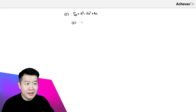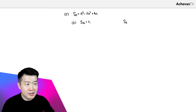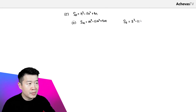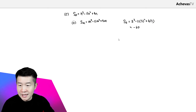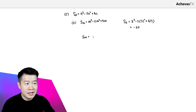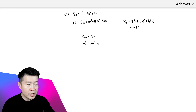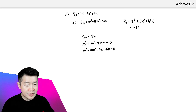In this part, we need two sums: the sum of the first M terms and the sum of the first 3 terms. For the sum of the first M terms, it is M cubed minus 11M squared plus 4M. For S3, it is 3 cubed minus 11 times 3 squared plus 4 times 3, and S3 equals minus 60. According to the question, the sum of the first M terms equals the sum of the first three terms, so M cubed minus 11M squared plus 4M plus 60 equals 0.